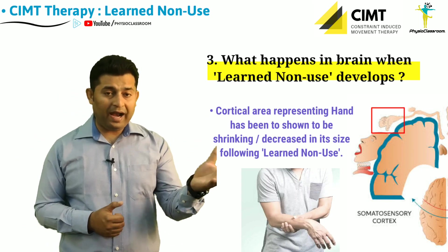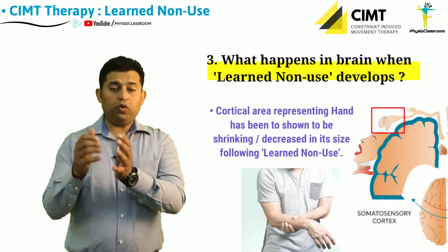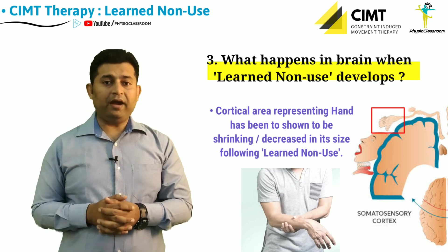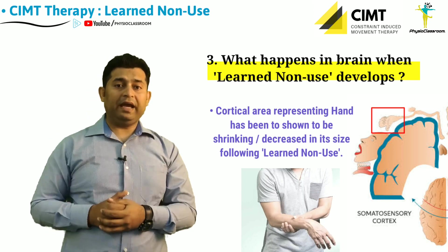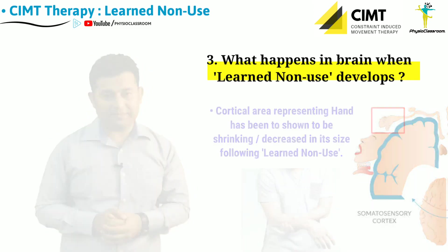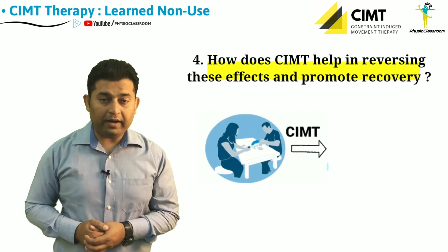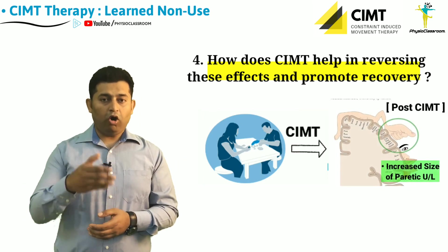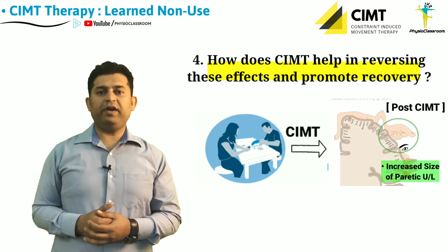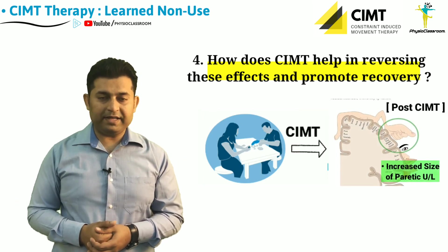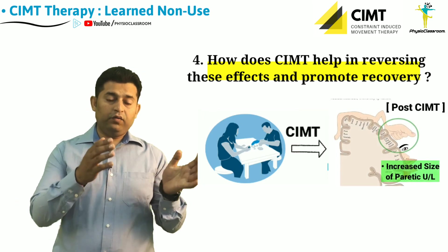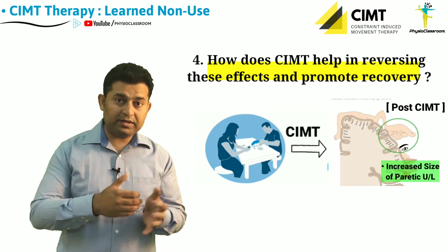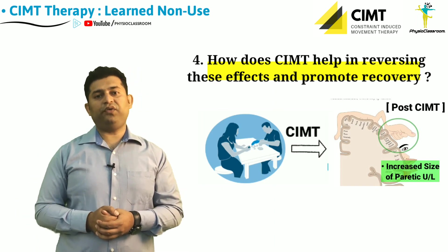This brings us to the last question of this second video of the CIMT series: how can CIMT actually reverse these effects of learned non-use and promote functional recovery in the weaker side upper limb?